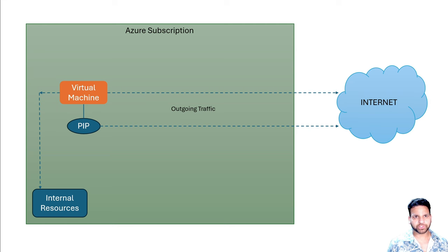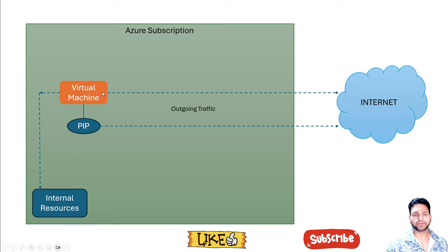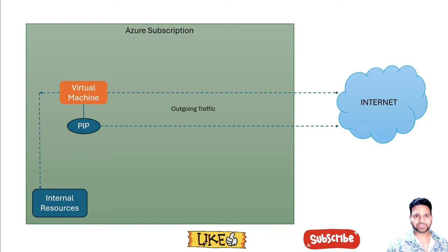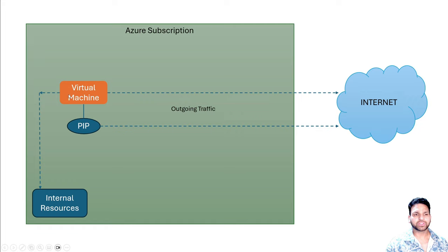When you create a virtual machine in an Azure environment, by default using the system routes it can connect to the internet, as you can see on your screen. If the virtual machine only has a private IP address, it can still connect to the internet directly. If it has a public IP address, the connectivity will be through that public IP. The default system routes allow internet connectivity, and within the same virtual network the virtual machine can connect to internal resources too.